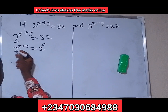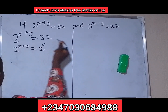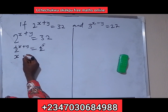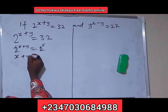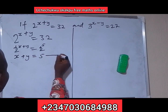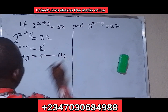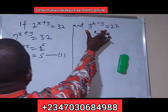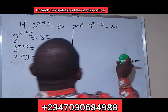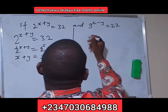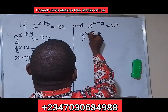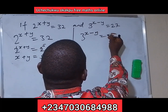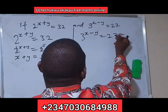The bases are the same, so we compare the powers: x plus y is equal to 5. This is equation 1. Then for the second equation, we have 3 raised to the power x minus y is equal to 27.